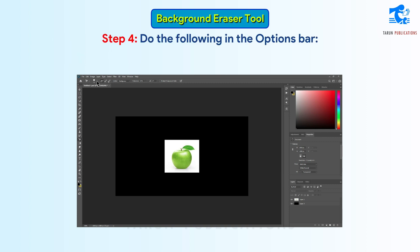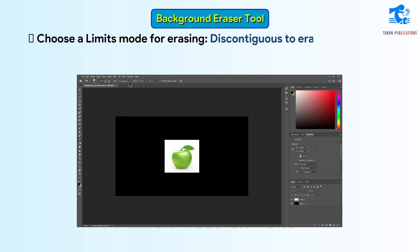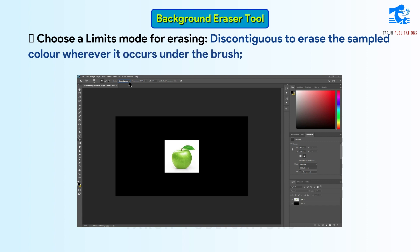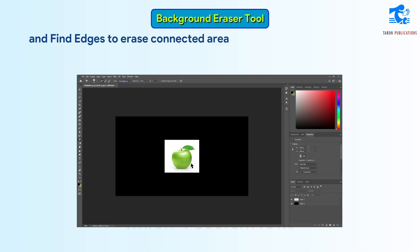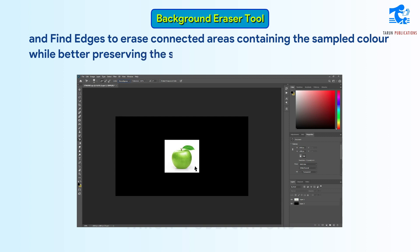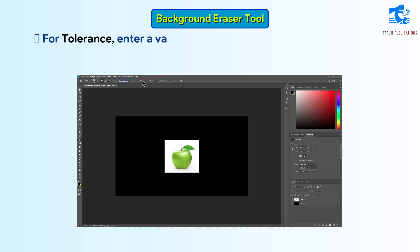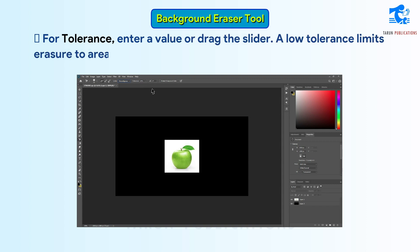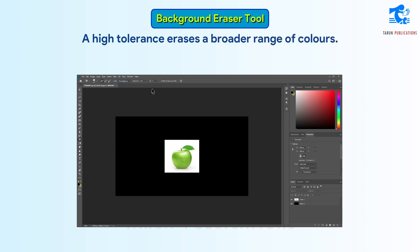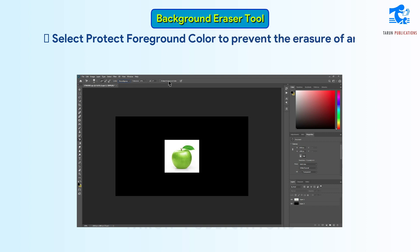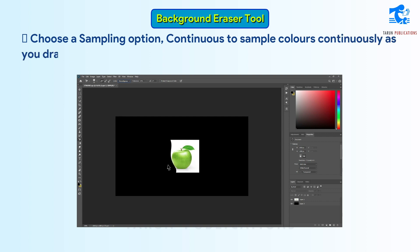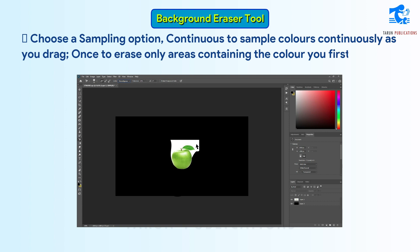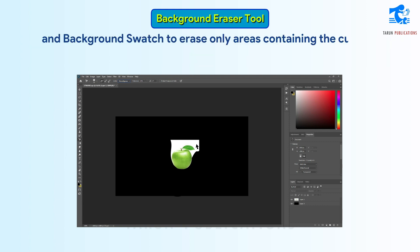Step 4: In the Options bar, choose a Limits mode for erasing — Discontinuous to erase the sampled color wherever it occurs under the brush; Contiguous to erase areas that contain the sampled color and are connected to one another; Find Edges to erase connected areas containing the sampled color while better preserving the sharpness of shape edges. For Tolerance, enter a value or drag the slider. A low tolerance limits erasure to areas very similar to the sampled color; a high tolerance erases a broader range of colors. Select Protect Foreground Color to prevent erasure of areas matching the foreground color. Choose a Sampling option — Continuous to sample colors continuously as you drag; Once to erase only areas containing the color you first click; Background Swatch to erase only areas containing the current background color.